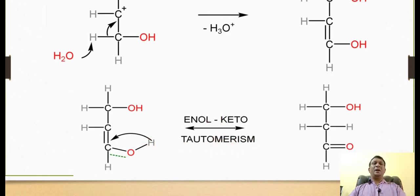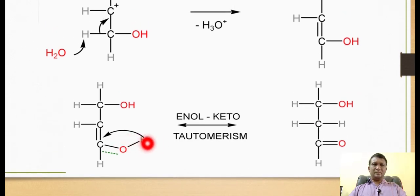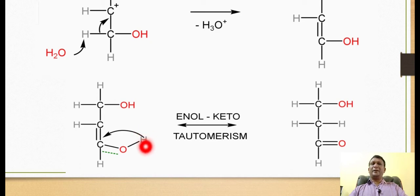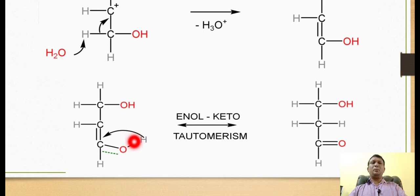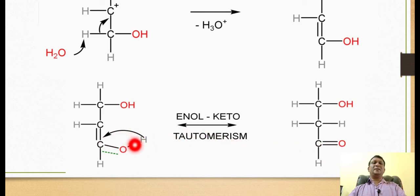This conversion is called tautomerism, and enols can easily undergo conversion into their keto form. The proton attached with the oxygen attacks the pi bond of the double bond, because this hydrogen is electrophilic in nature as it is attached to the electronegative oxygen. When this hydrogen attacks the carbon, the reaction is an electrophilic addition reaction. The hydrogen gets attached to the second carbon. When the oxygen-hydrogen bond is broken, the electron pairs are taken by the oxygen and used to make a double bond with the carbon. So there is migration of hydrogen from the hydroxyl group to the carbon, and formation of a double bond between this carbon and the oxygen.